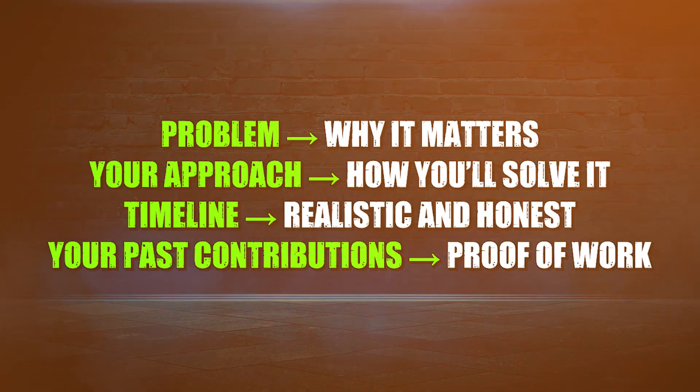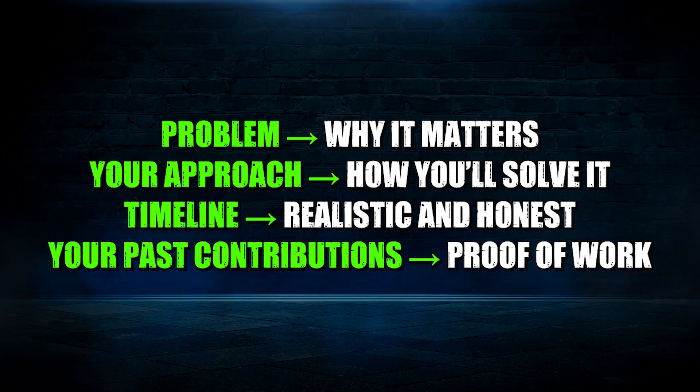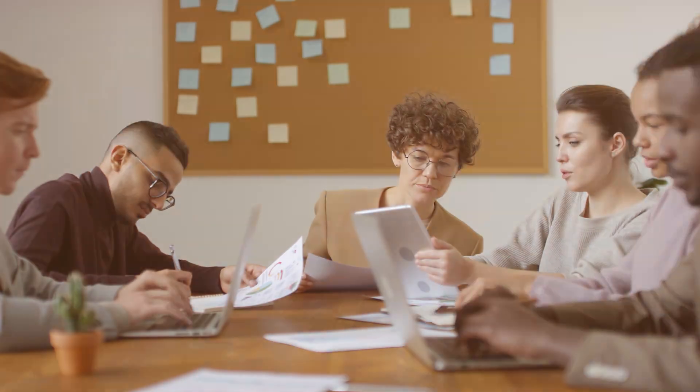By now you should understand the codebase, know the maintainers, and have context about the project's problems. Your proposal is not a formality — it's proof that you understand the problem deeply, can break work into milestones, and won't disappear mid-program. A strong proposal covers: what the problem is, what your approach is, what the timeline is, and your past contributions. Your approach explains how you solve it, your timeline should be realistic and honest, and your past contributions are proof of your work. Over-promising kills more proposals than under-preparing.